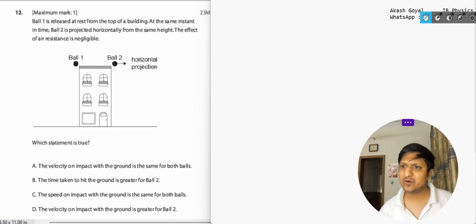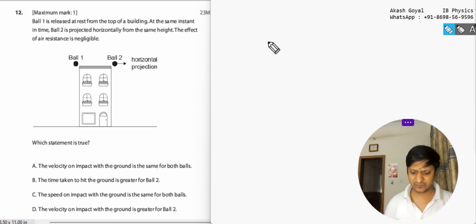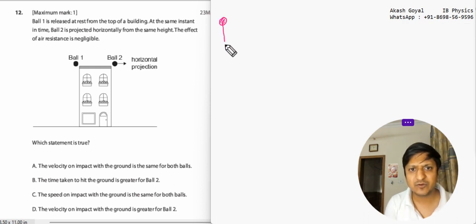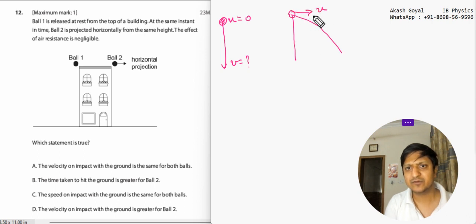We have to analyze all the statements. First, we'll understand what the question says. We have a ball that goes downward like this. Here u equals 0 and v would be something. On the other hand, there is a ball from the cliff, from the building, and it goes like this. So here the velocity is u.